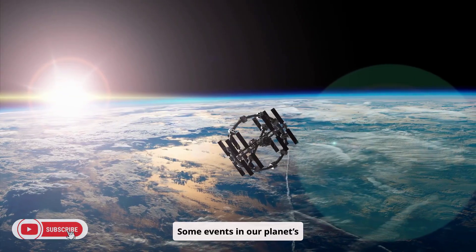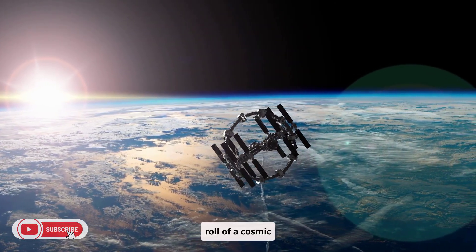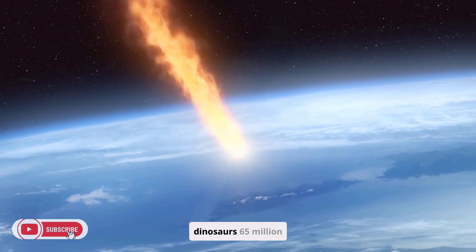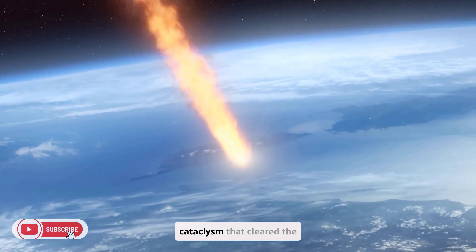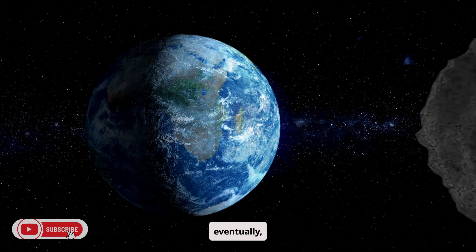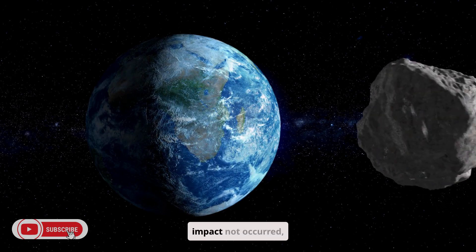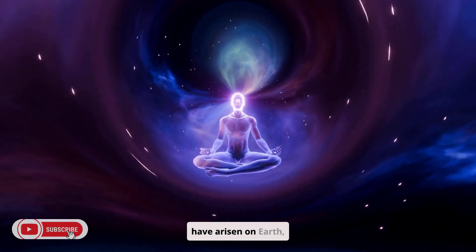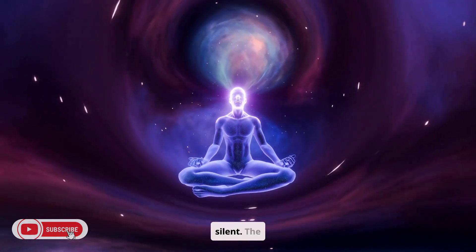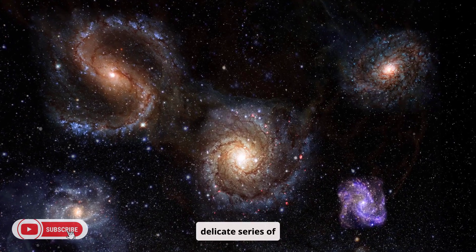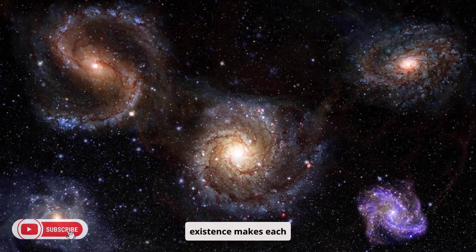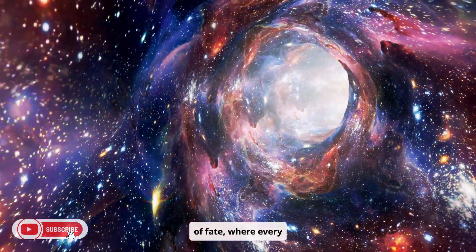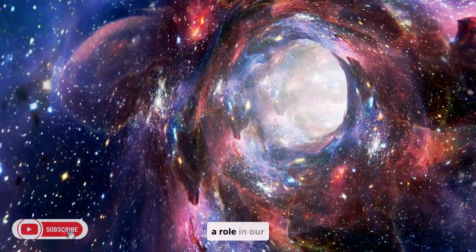Some events in our planet's history read like the roll of a cosmic dice. Consider the asteroid impact that wiped out the dinosaurs 65 million years ago, a cataclysm that cleared the way for mammals and, eventually, us. Had that impact not occurred, it is possible that intelligent life might never have arisen on Earth, leaving our galaxy silent. The delicate series of coincidences that led to our existence makes each moment of consciousness all the more precious. It is a lottery of fate, where every twist of chance has played a role in our survival.